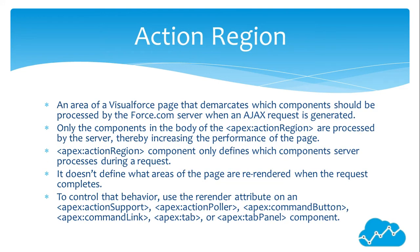Action region is an area of a Visualforce page that demarcates which components should be processed by the Force.com server when an AJAX request is generated. Only the components in the body of the Apex action region are processed by the server, thereby increasing the performance of the page. The Apex action region component only defines which components the server processes during a request — it doesn't define what areas of the page are re-rendered when the request completes.